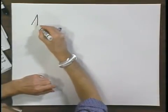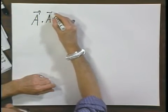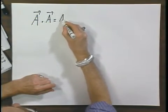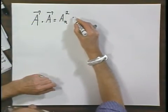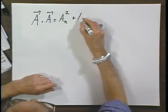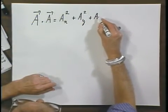What is the dot product of a vector with itself? If I have a vector a, and I dot it with itself, then according to our definition, it would be a x squared plus a y squared plus a z squared.